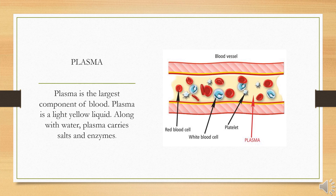Blood plasma is a yellowish liquid component of blood that holds the blood cells in suspension. It is the liquid part of the blood that carries cells and proteins throughout the body. It makes up about 55% of the body's total blood volume. It is mostly water and contains important dissolved proteins, hormones, carbon dioxide and oxygen.